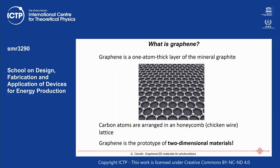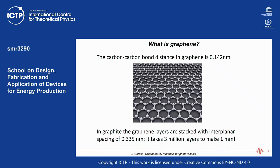The carbon-carbon bond distance in graphene is 0.14 nanometers, and the interplanar spacing in graphite between single layers is 0.335 nanometers, so it takes about three million layers to make one millimeter of graphite. If you exfoliate graphite more and more, you can end up with a single layer.